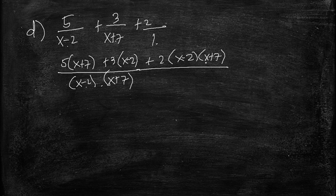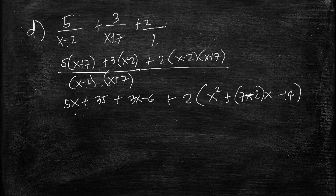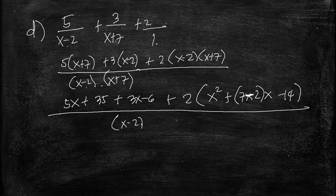Expanding letter D: we get 5x plus 35, plus 3x minus 6, plus 2 times the quantity x squared plus 7x minus 2x minus 14, based on the special product of x minus 2 times x plus 7. Combining: 5x and 3x give 8x at this stage.